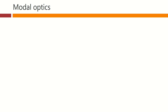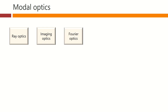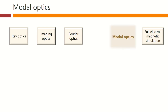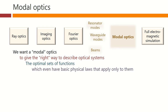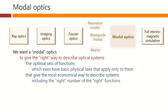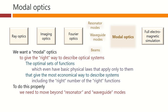There are many ways we're used to thinking about optics: ray optics, imaging optics, Fourier optics where we start to bring in the wave nature of light, and at the other end, full electromagnetic simulation of electromagnetic fields. In between these, we have ideas of modes — resonator modes, waveguide modes, and also to some extent different kinds of beams. But this part of optics is slightly less clear than the others. We want some kind of modal optics to give us the right way to describe optical systems — the optimal sets of functions, which might even have basic physical laws that apply only to them — and that give us the most economical way to describe systems, including the right number of the right functions. To do this properly, we need to move beyond the resonator and waveguide modes that we're used to, and even beyond the ideas of beams that we like to think of.